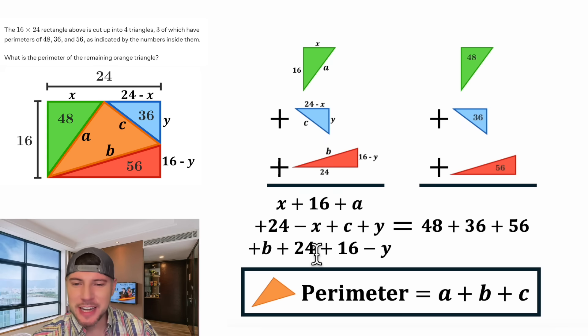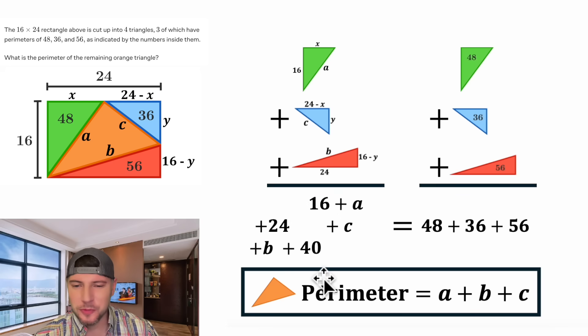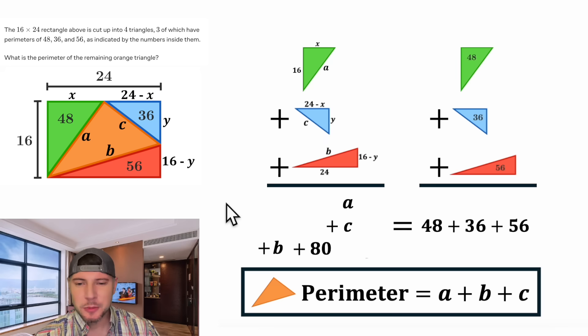On the left-hand side, we have an X and a negative X. They can cancel each other out. Y and the negative Y can also cancel each other out. So the X and the Y didn't do anything besides organize our thoughts. And then we can combine like terms. Down here, the 24 plus 16 is 40. And this 16 plus 24 is also 40. And then 40 plus 40 is 80. So we have A plus B plus C plus 80 equals all this stuff. And on the right-hand side, 48 plus 36 plus 56 is 140.